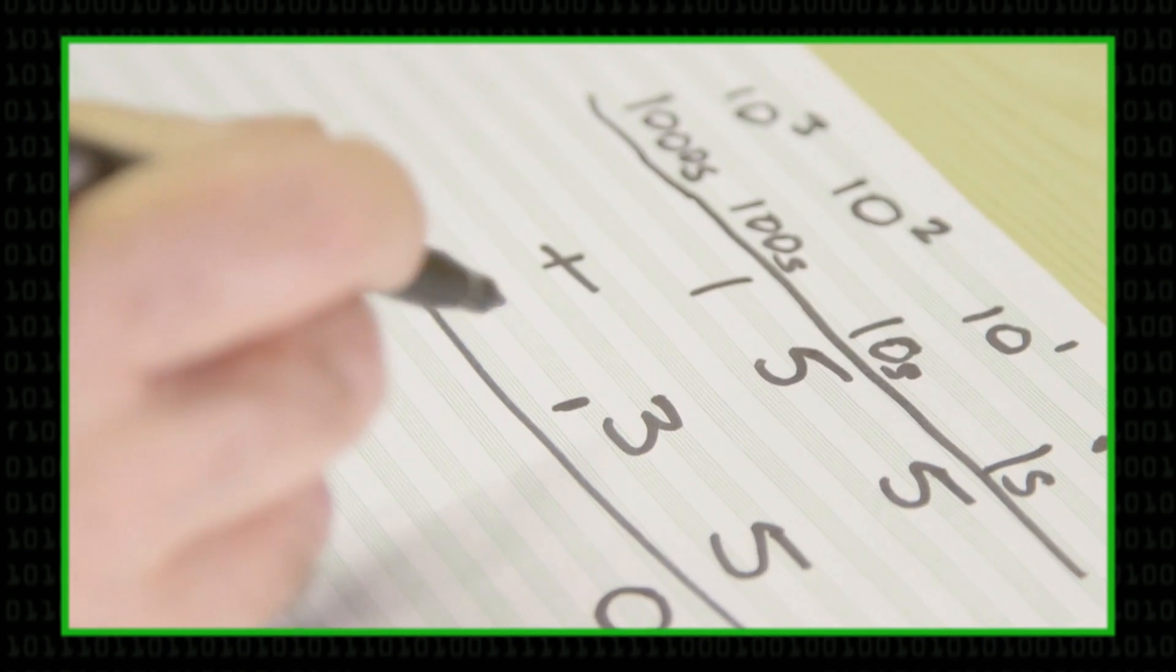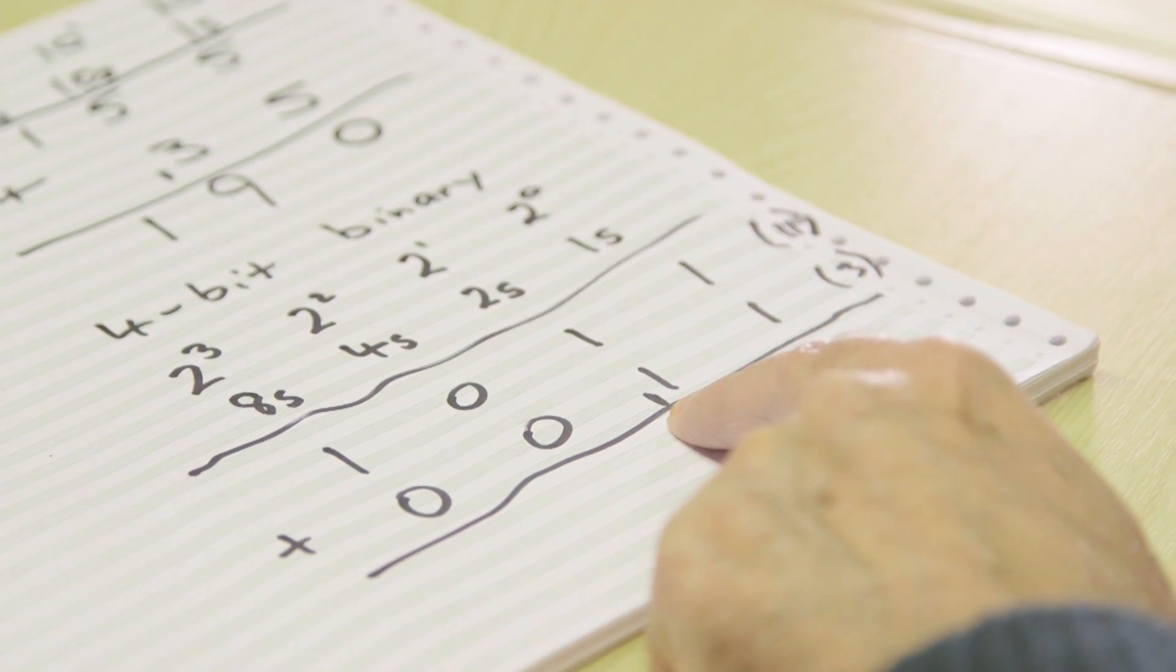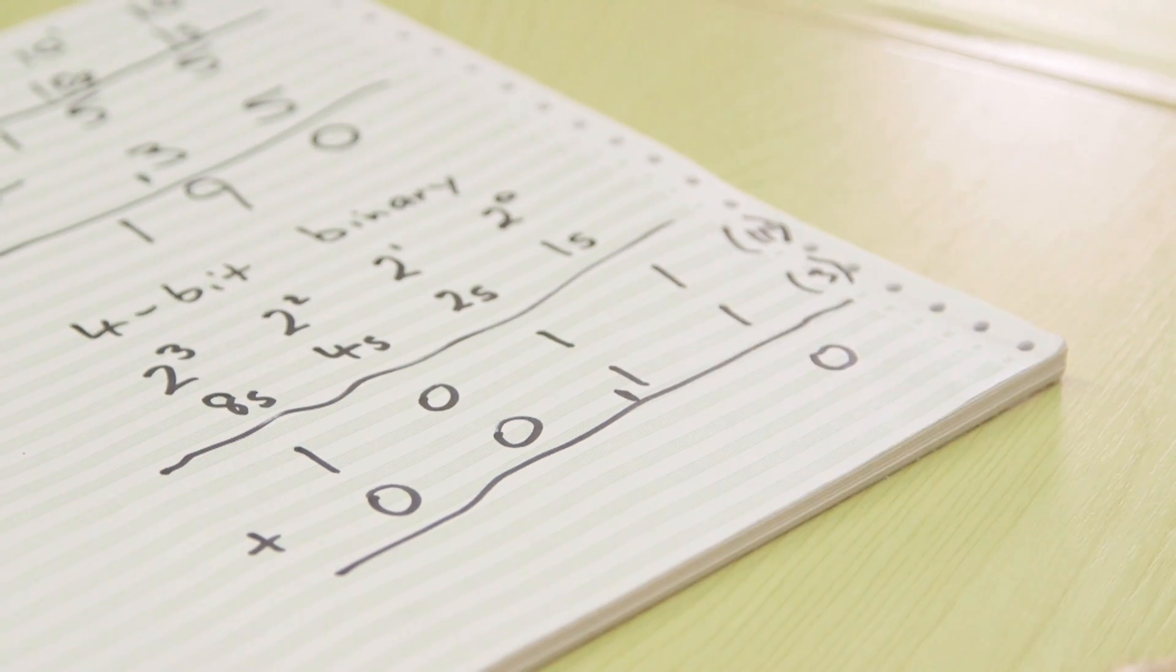1 plus 1 is 2. You want to write down 2, but you're not allowed to. It's like saying 5 plus 5 is 10. You can't write 10. You've got to write 0 down and carry 1. Just the same here. 1 plus 1 is 2, but I have to put a 0 down and carry 1 as a memo to say I must remember to add that 1 in as well.